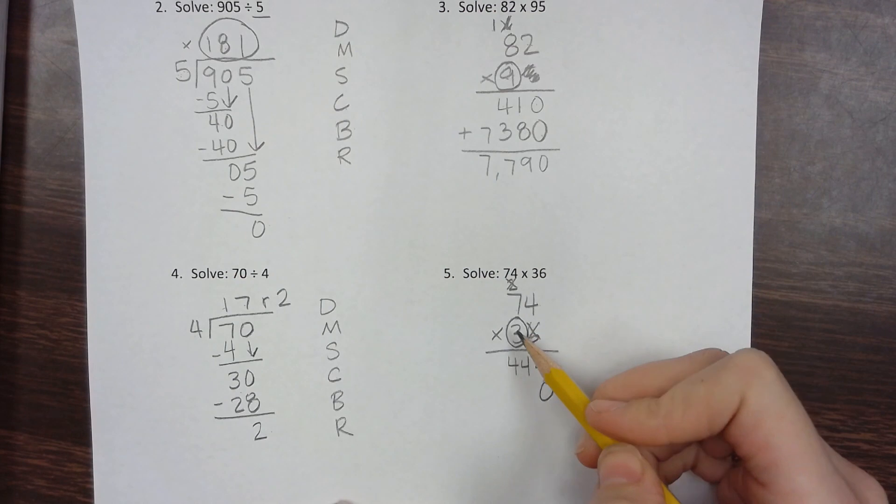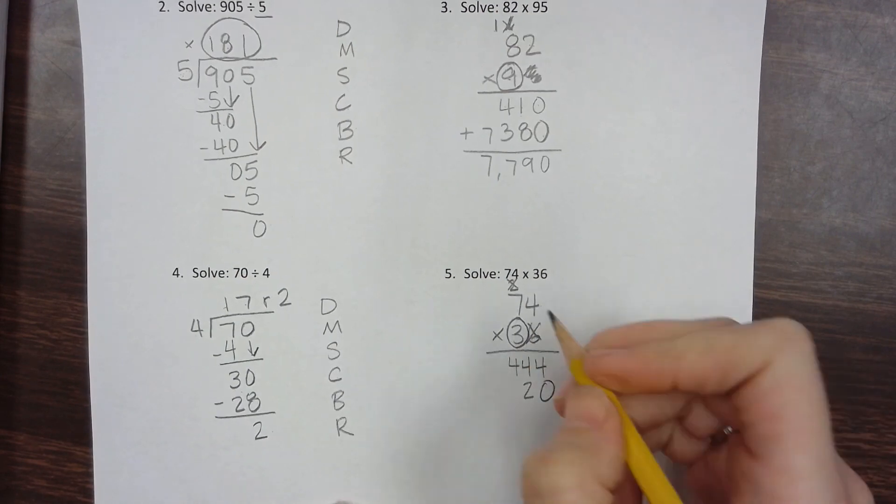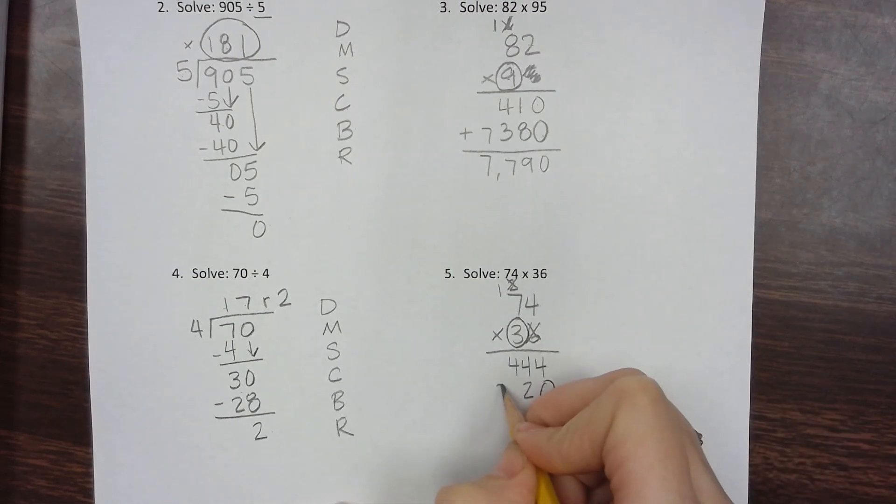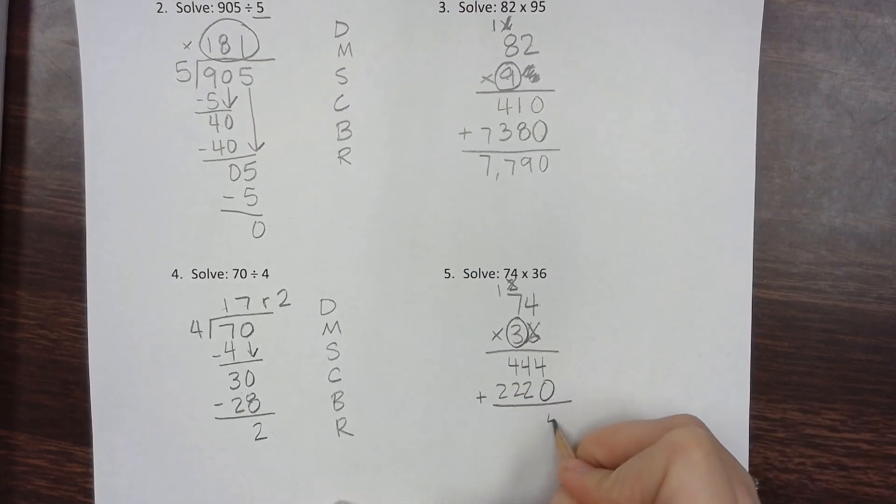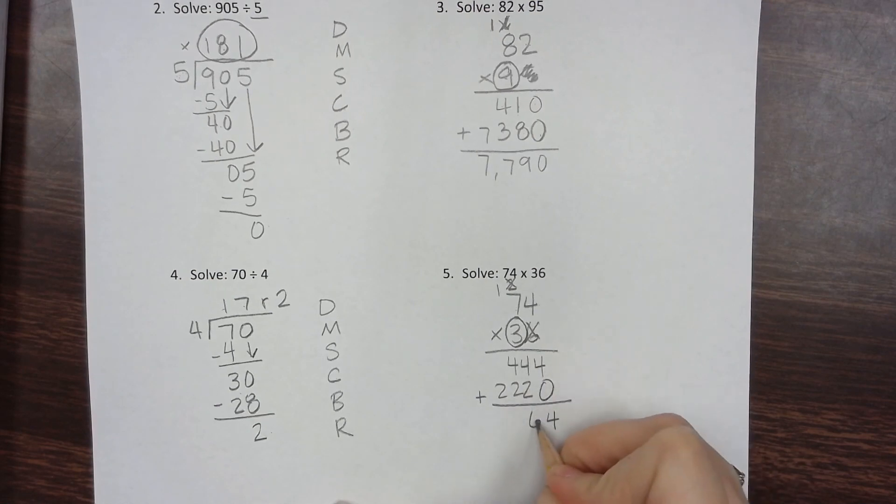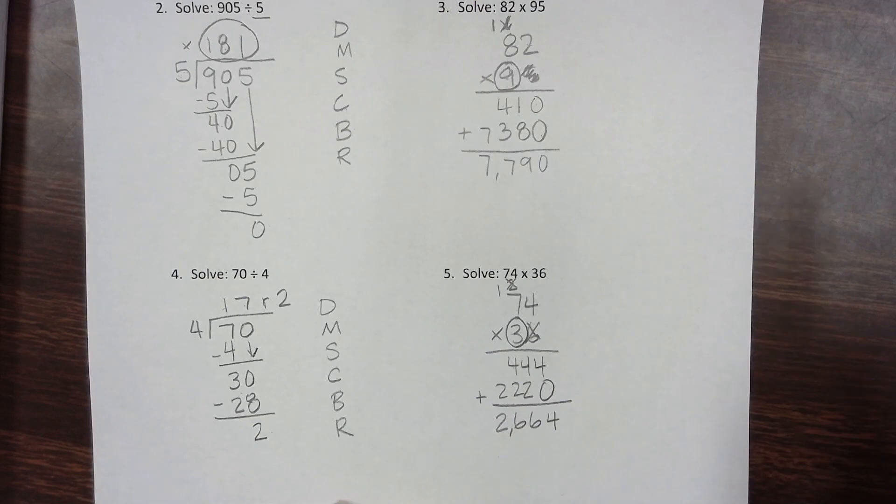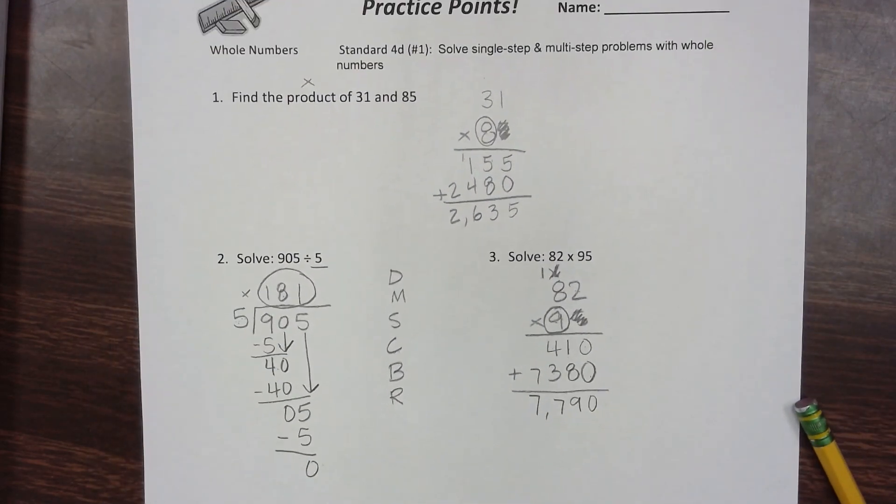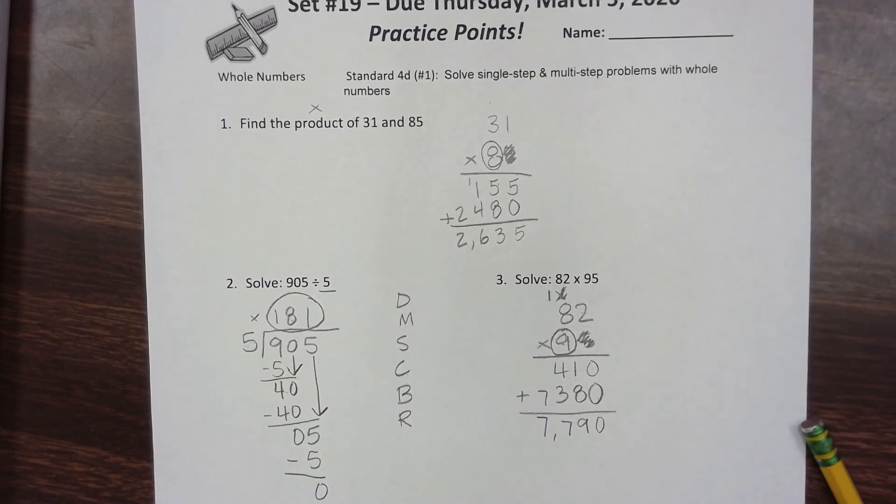Start with the tens digit: 3 times 4 is 12, 3 times 7 is 21, plus 1 is 22. Add these together: 4 plus 0 is 4, 4 plus 2 is 6, 4 plus 2 is 6, bring down the 2. The final answer is 2,664.